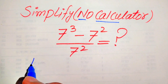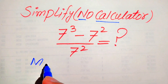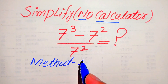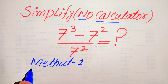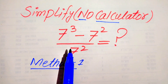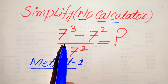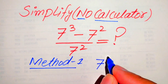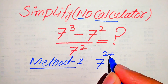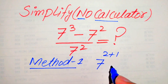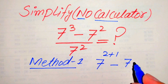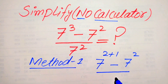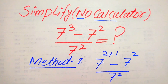We solve this problem using two methods. In the first method, we focus on the exponent of this term and break 7 cubed as 7 to the power of 2 plus 1, minus 7 squared, divided by 7 squared.